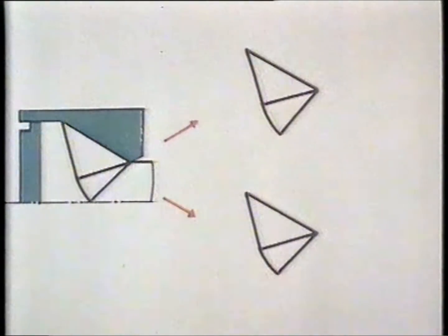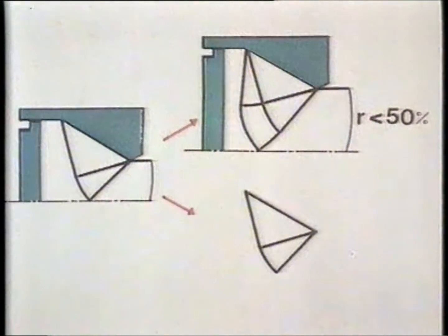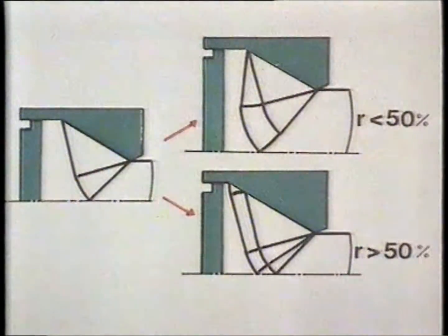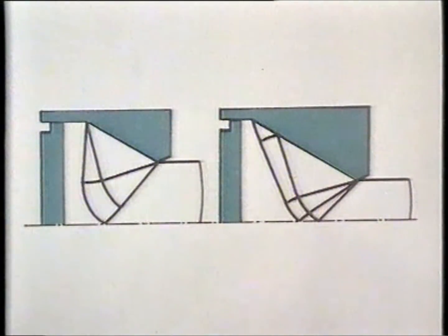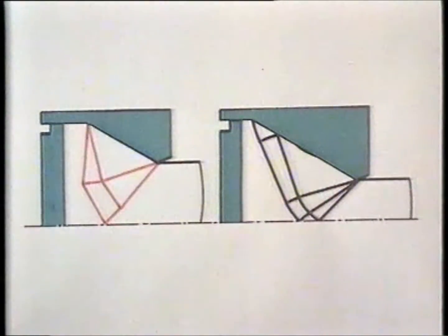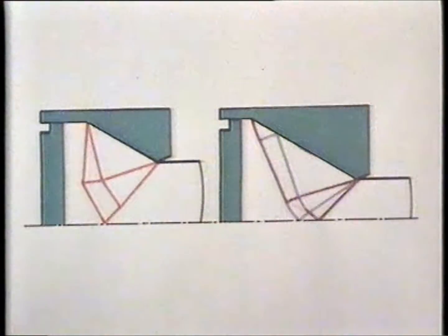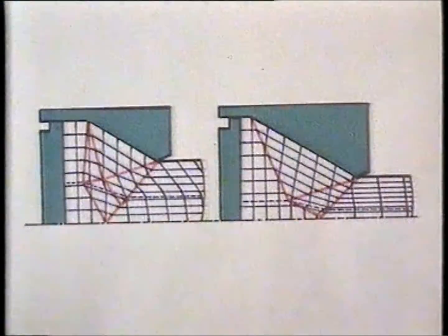The slip line field for 50% reduction through a 30 degree taper is particularly simple. It can be developed for similar extrusions where reductions are less or greater than 50%. These two new fields are straightened out into upper bound fields. Next, the theoretical deformed networks are constructed and they look like this.